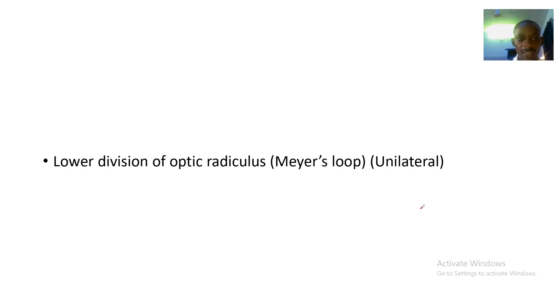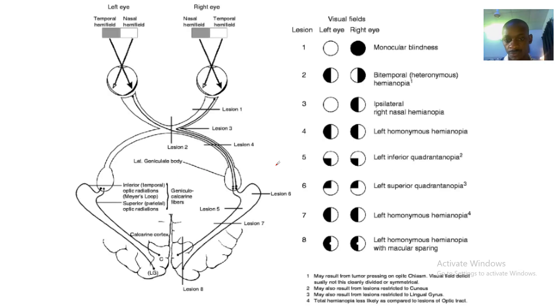That's the lower division of the optic radiations, right? Lesions in... I think this should be lesions in the lower optic radiation, okay. So this is superior quadrantanopia.